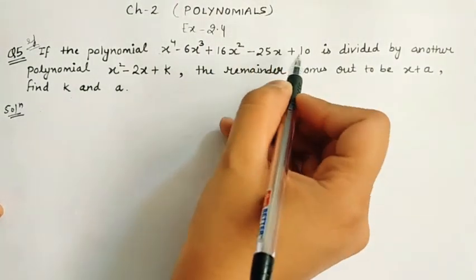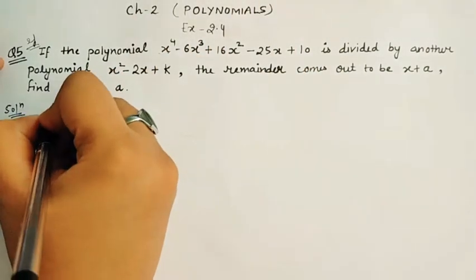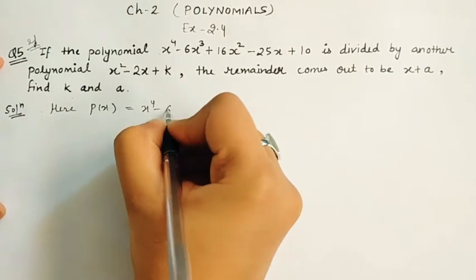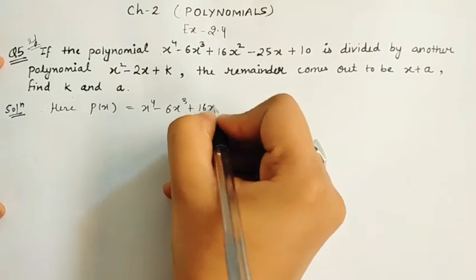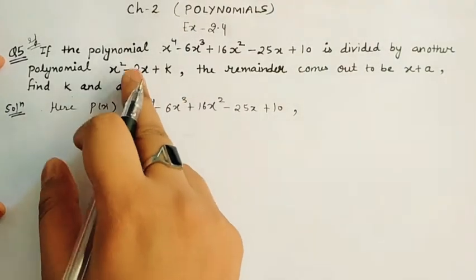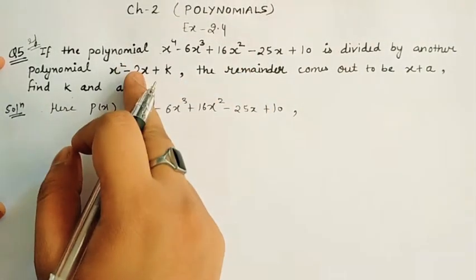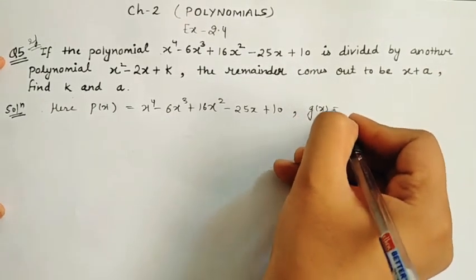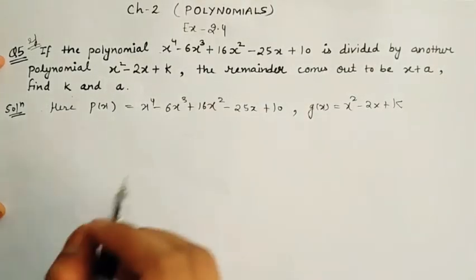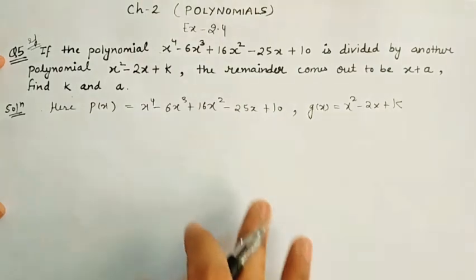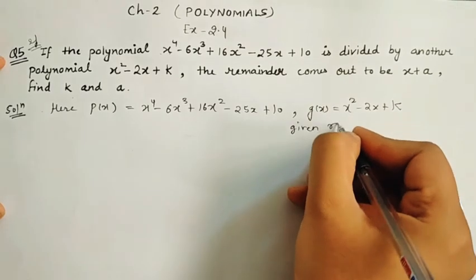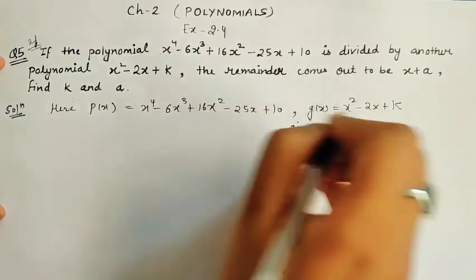So let's start division. First of all, we know that who we have to divide, we will generally call P(x). So here, P(x) = x⁴ - 6x³ + 16x² - 25x + 10. G(x), which we divide by, that means our divisor, so G(x) = x² - 2x + k. Now, what is our remainder? Our remainder after solving will come, but given remainder we can write now. So given R(x) = x + a. Now that is given. Now we will get our remainder by division.